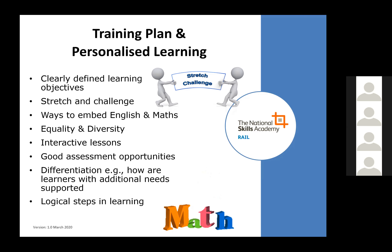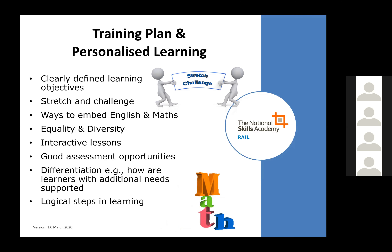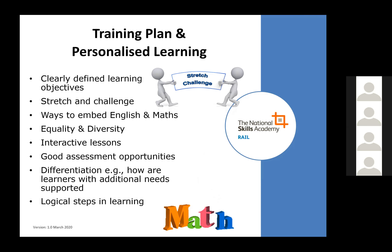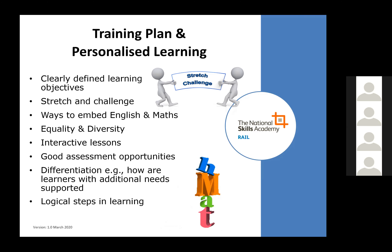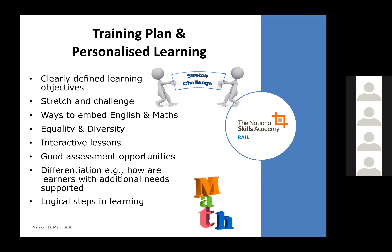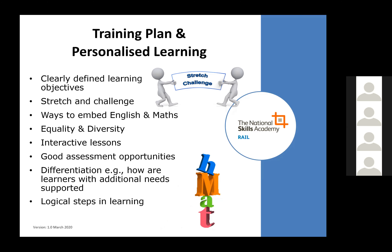In your training plan or progress report there should be somewhere clearly defined learning objectives — what is the point of what they're learning and what will the learners know as a result of this qualification? If you've got learners on your course who have done it five times, how are you personalising the learning for them? How are trainers stretching and challenging those learners? Good practice is that we see that in the progress records.